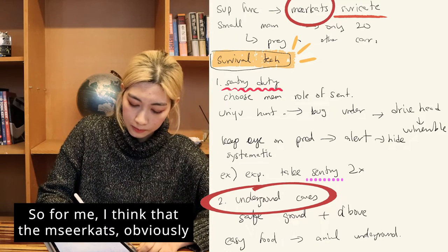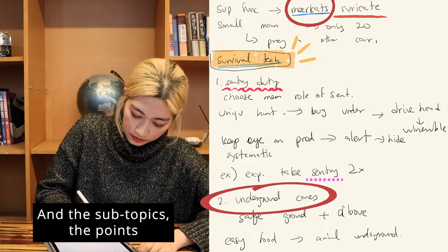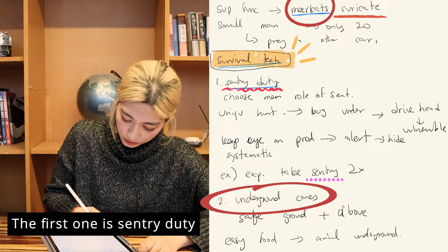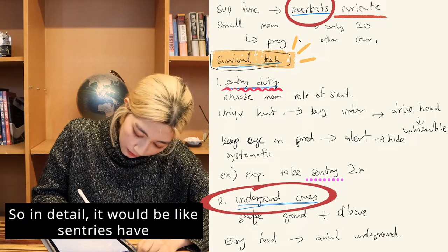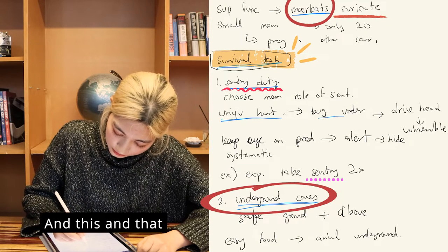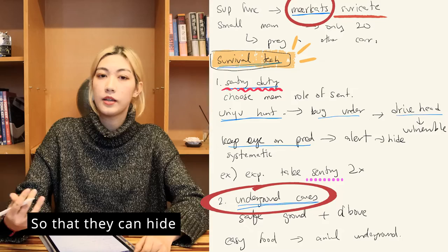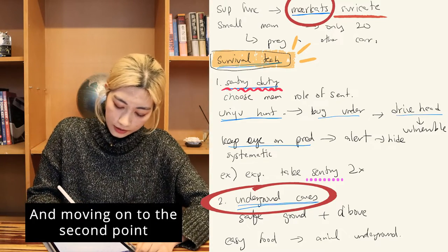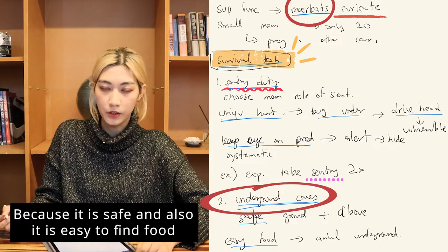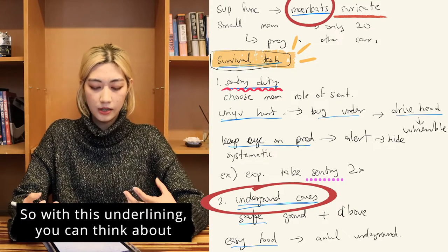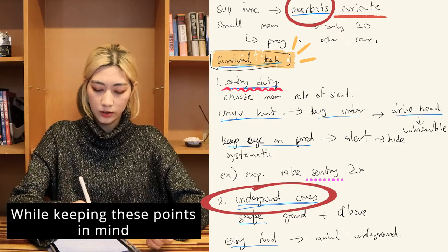The key keywords are: meerkats, survival techniques, and the two subtopics — sentry duty and underground caves. For sentry duty: meerkats have unique hunting traits that make them vulnerable, which is why they need sentries to watch for predators so the group can hide. For underground caves: they live there because it is safe and it is easy to find food. With these points underlined, you can plan your answer and make it up while keeping these details in mind.